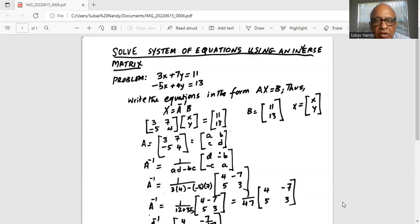Matrix A contains the coefficients of x and y in the two equations. In the first equation, the coefficient of x is 3 and y is 7. In the second equation, the coefficient is minus 5 and 4. So the components of matrix A are 3, 7, minus 5, and 4.